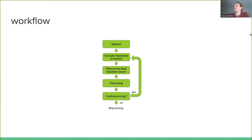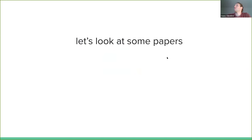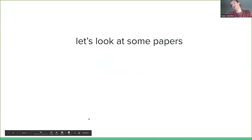Then you basically make the decision: do you continue pruning or not? Normally, if you prune too much away before fine-tuning, you will probably lose too much accuracy. So you want to tune basically how much you're removing before fine-tuning. Then you can decide if you want to continue pruning or not — that depends on whether you still want to prune and you see that the accuracy is still good. Probably you want to continue pruning and see how far you can get with it.